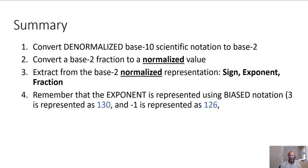So we'll do an example shortly. But the summary is take a denormalized base 10 value and convert it to base 2. Convert that base 2 to a normalized value. So it'll be something like 1.00111 times 2 to the fifth. That would be the normalized value. Once you've converted to base 10, you'll normalize it. So maybe it's something like this times 2 to the fifth.